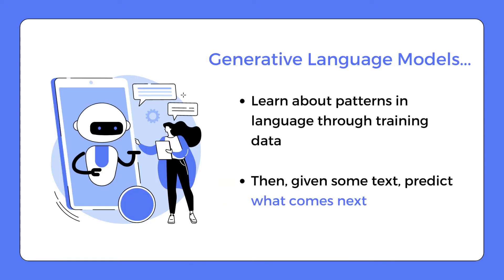Like we mentioned before, generative language models learn about patterns and language structures through their training data, and then when given some text, they try to predict what comes next. In a sense, generative language models can be seen as pattern-matching systems, honing their ability to discern patterns from the data presented to them.